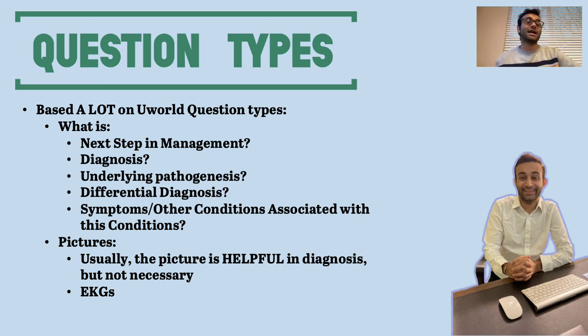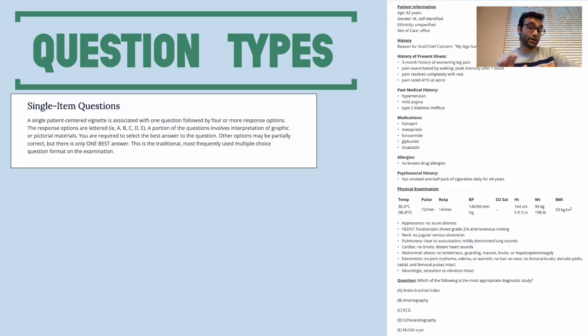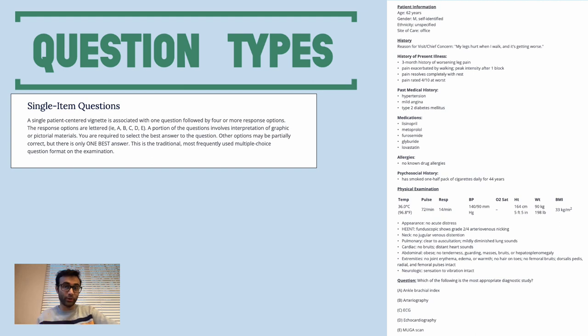Here are the things that are actually mentioned on the website for the USMLE Step 3, and this is all stuff that's directly on their website. So I'm literally showing you this, and it's the upfront type of question that you're going to see on the test. The first one is the single-item questions. So it's going to literally show you this. I can't tell you how many times I saw this on test day. It's literally going to give you a basic patient note that you might find in a hospital with the patient's information, history, HPI, past medical history, and it's going to give you a bunch of stuff related to that patient. And then it's going to ask you, which of the following is the most appropriate diagnostic study?